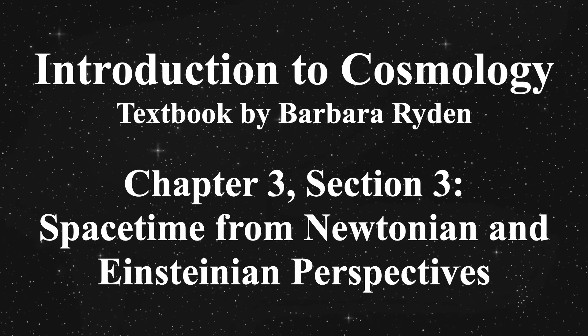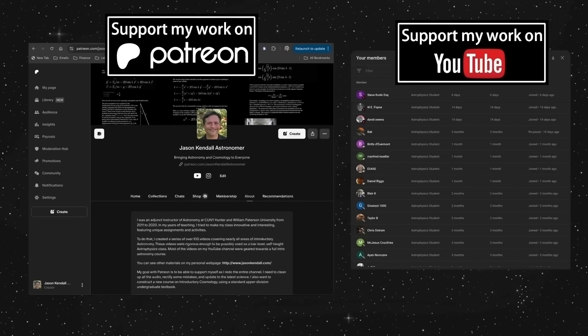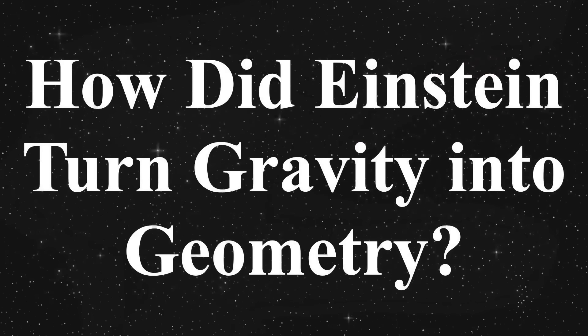Hello, I'm Jason Kendall, and I've been going through Dr. Barb Ryden's textbook, Introduction to Cosmology. This is Chapter 3, Section 3, The General Way of Einstein. I'm glad you're watching, and I'd like to take a moment to acknowledge my Patreon supporters and YouTube members. Their support means a lot to me since it keeps this channel going. I also give special perks and advanced views to my supporters. And now on with relativity. Specifically, how did Einstein geometrize gravity, and where did that idea come from?